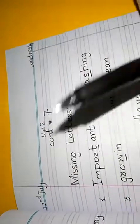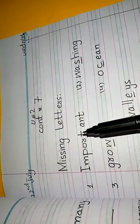Unit number 2 Question number 7 Missing letter. Hum sb se pahle notebooks pe done karengay. First letter is important.